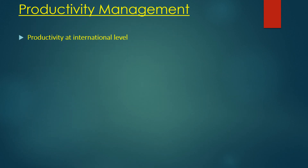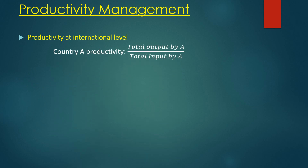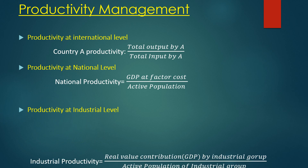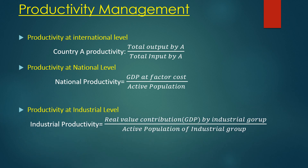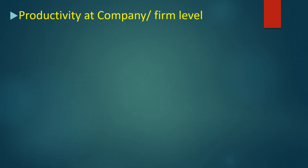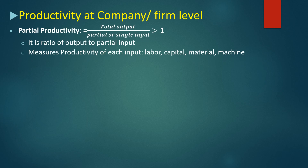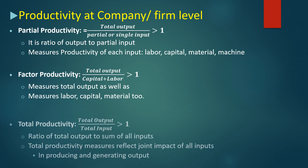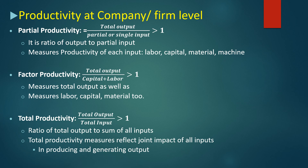Productivity management at the international level: a country's productivity is calculated by total output produced by that country divided by total input. At the national level, national productivity can be calculated by GDP at factor cost divided by active population. At the industrial level, industrial productivity equals real value contribution (GDP) by industrial groups divided by the active population of that industrial group. At the company or firm level: partial productivity is total output divided by partial or single input (greater than one); factor productivity is total output divided by labor and capital (greater than one); total productivity is total output divided by total input (greater than one).